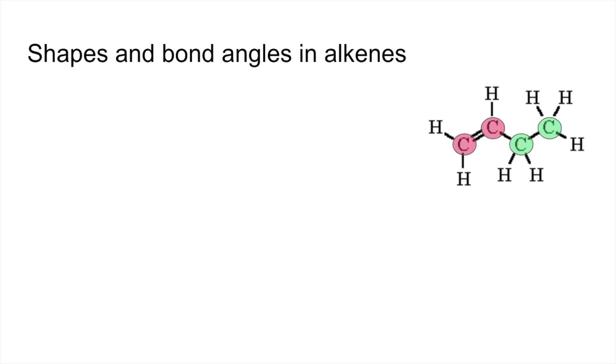We'll finish with shapes and bond angles in alkenes. We've got this diagram here—this is but-1-ene. The two pink carbons are the carbons of the double bond, and the green carbons are the regular single-bonded carbons. We'll deal with the pink ones first.